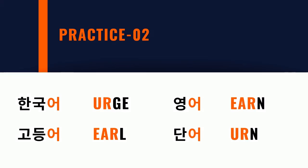Now do the opposite. Say the Korean word '한국어' — ㅓ — and then raise the tip of your tongue to pronounce 'urge': 한국어, ㅓ, raise the tip — urge. '영어' — ㅓ — raise the tip — earn. Remember, don't change anything. Don't change the shape of your mouth; just stay in that position. '고등어' — ㅓ — raise the tip of your tongue — er — earn.